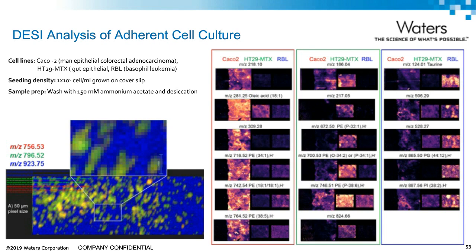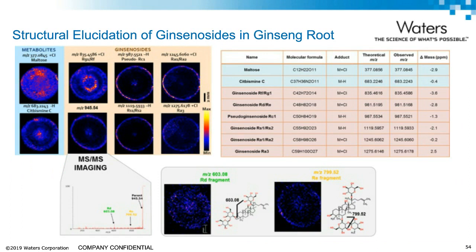Mass spec imaging is not just limited to mouse brain or liver sections or mammalian tissue. We can also image a plant section. Here is an example of analyzing ginseng root — the same workflow exists: you take a thin section, put it on a slide, and do analysis. By doing imaging, we can tell whether the ginsenosides are in the outer or inner surface of the root. For confirmation of those ginsenosides, if m/z value alone is not enough, we can also do MS/MS imaging, which allows us to very confidently confirm the identity of those molecules.